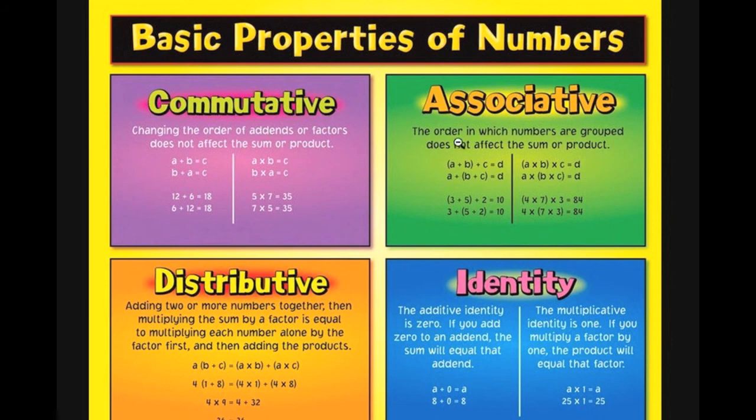Team, memorize this sheet. Memorize these properties. Commutative, associative, distributive, and the additive and multiplicative identities. Yay? Yay.